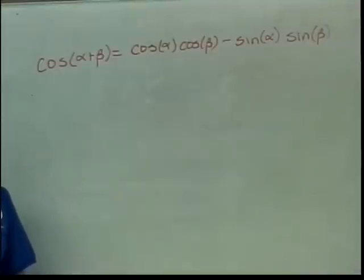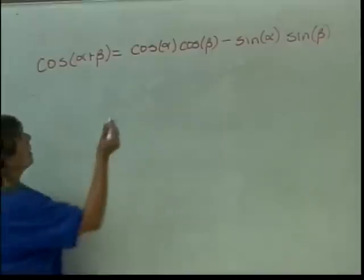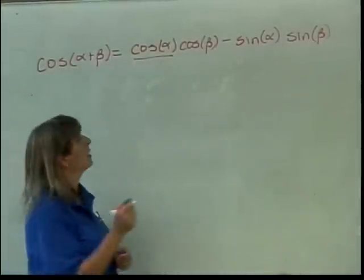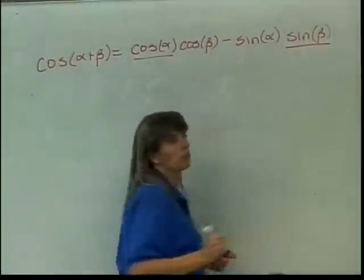Which ones do I have? Cosine of alpha is given, so that one I've got. What else do I have? Sine of beta. That one's given, so I've got that.